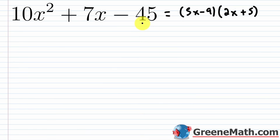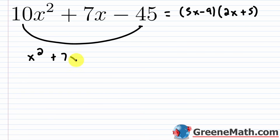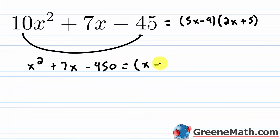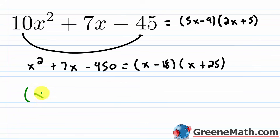For slide and divide on 10x² + 7x − 45: slide the 10 down, making the leading coefficient 1, giving x² + 7x − 450. We already know the two integers: −18 and 25. So factor as (x − 18)(x + 25).